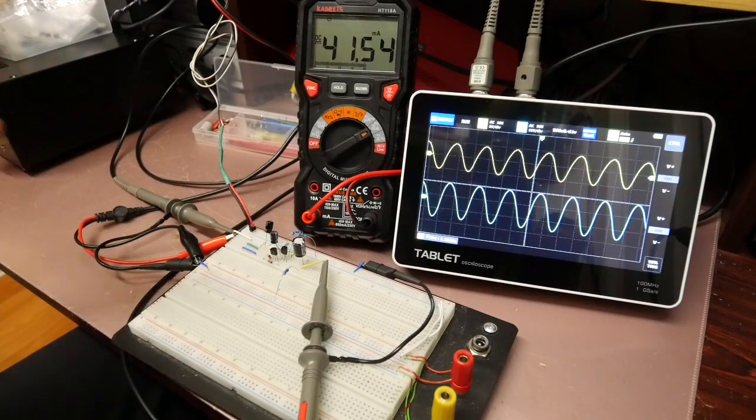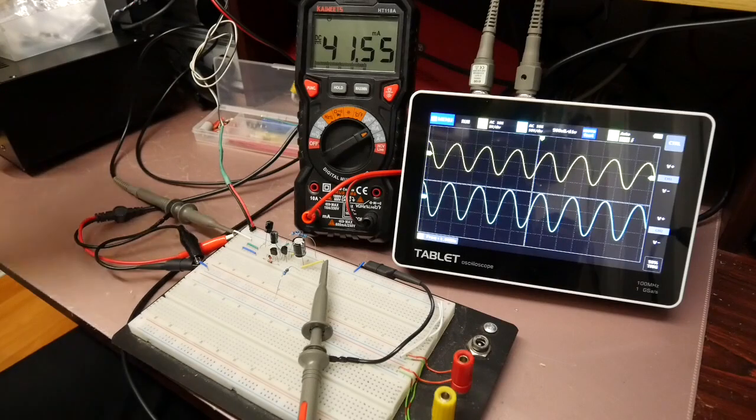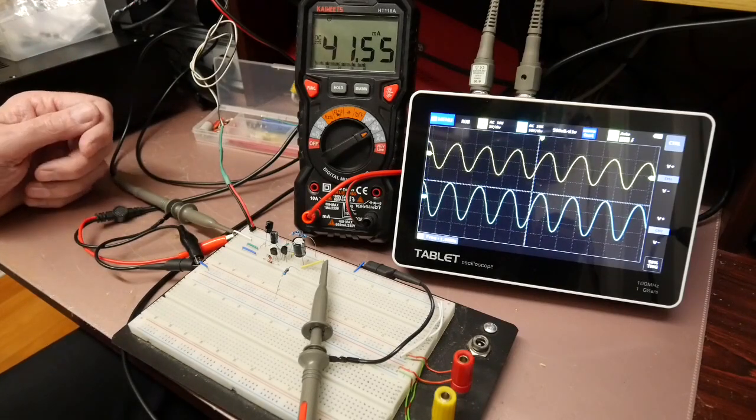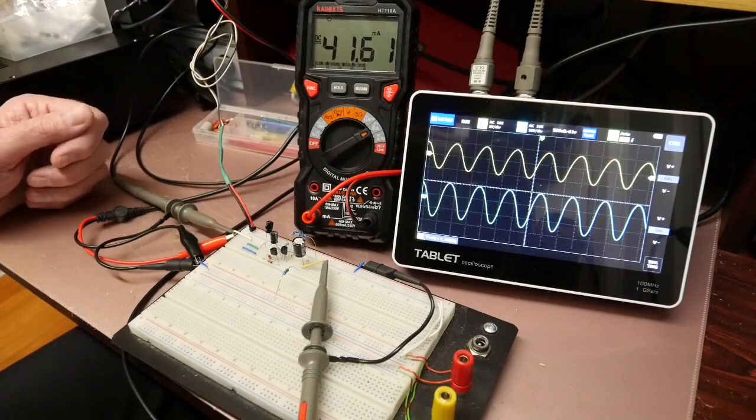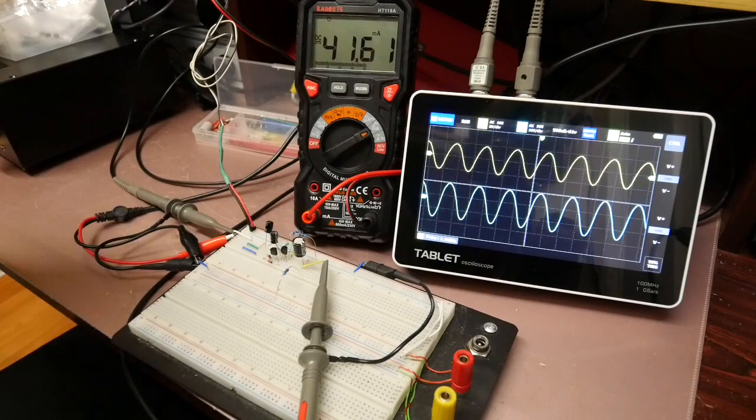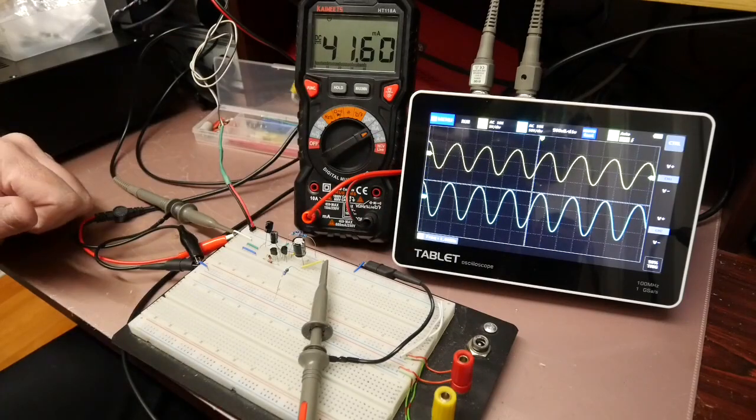Now we've got this circuit built exactly as per its parameters and I've currently got it running at about 10 volts power supply drawing 41 to 42 milliamps and you've got the display as you can see there.